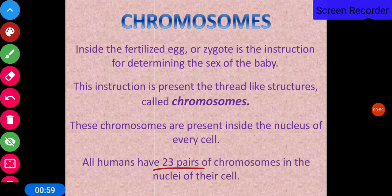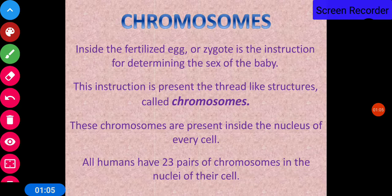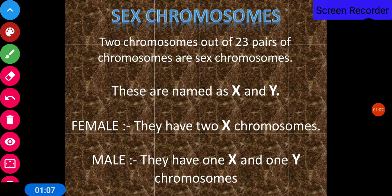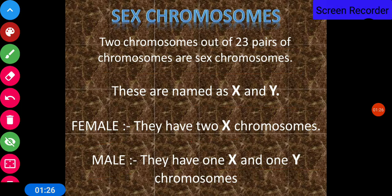All humans have 23 pairs of chromosomes in the nuclei of their cells. Two chromosomes out of these 23 pairs are the sex chromosomes, named X and Y. Females have two X chromosomes, while males have one X and one Y chromosome.